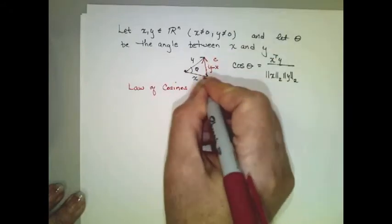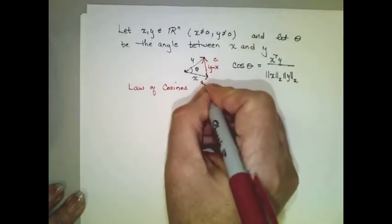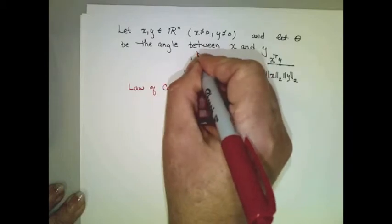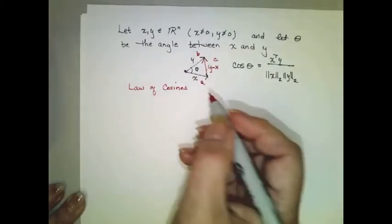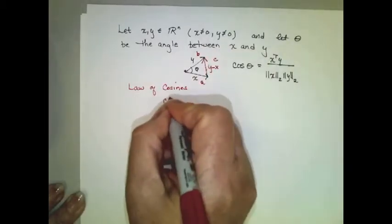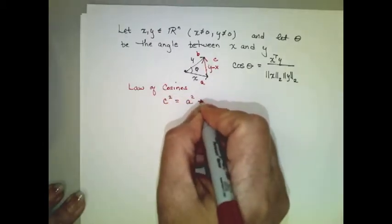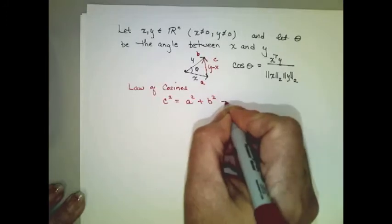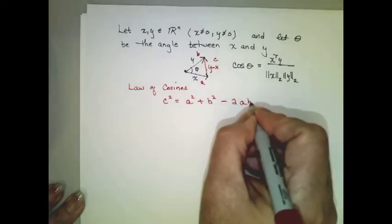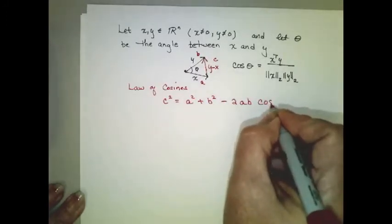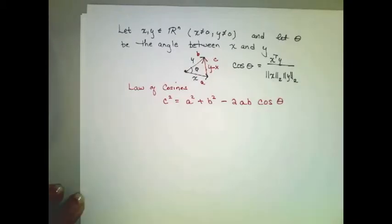and the vector x as having length a and y as having length b, the law of cosines says that c squared is equal to a squared plus b squared minus 2ab cosine theta. So actually it's just an extension of the Pythagorean theorem.